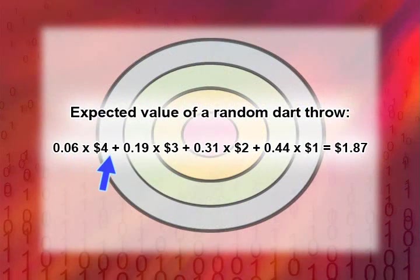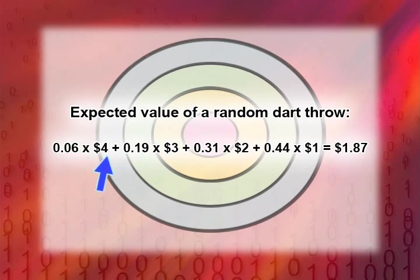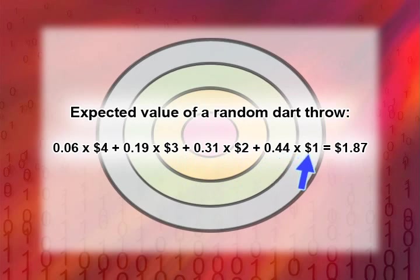The expected payoff is: probability times payoff for each ring. There's a 6% chance of a $4 payoff, 19% chance of a $3 payoff, 31% chance of a $2 payoff, and 44% chance of a $1 payoff. Multiplying and summing: (0.06 × $4) + (0.19 × $3) + (0.31 × $2) + (0.44 × $1) = $1.87. On average, with thousands of people randomly throwing darts, you would pay out $1.87 per dart thrown. So as the bar owner, you would charge $1.87 to make the game completely fair.